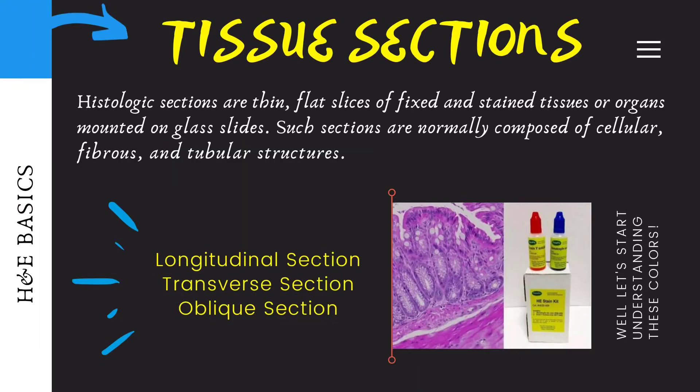So let's start with the very basic idea first. Histology, as we all know, is the study of tissues. Now, to get a fine understanding of these microscopic structures, we take sections of tissue to study under the microscope. Now, as we know, the majority of the tissues are colorless, so we stain them with dyes to observe them under the microscope. There are many methods of staining, but the H&E method is the most commonly used one.